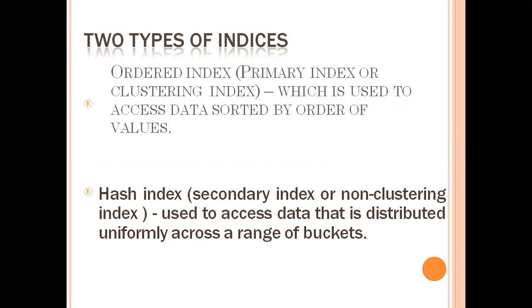The ordered index is used to access data stored in order of values. The second type is the hash index, also known as a secondary or non-clustering index, used to access data distributed uniformly across a range of buckets. So, the first type is the ordered index, also known as clustering or primary index, and the second is the hash index.